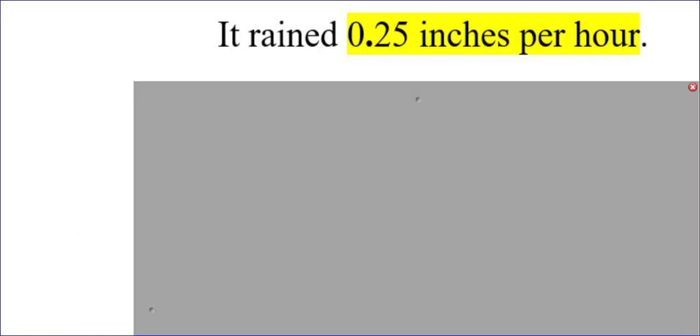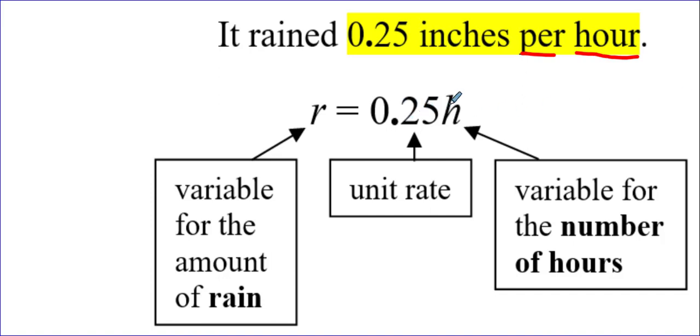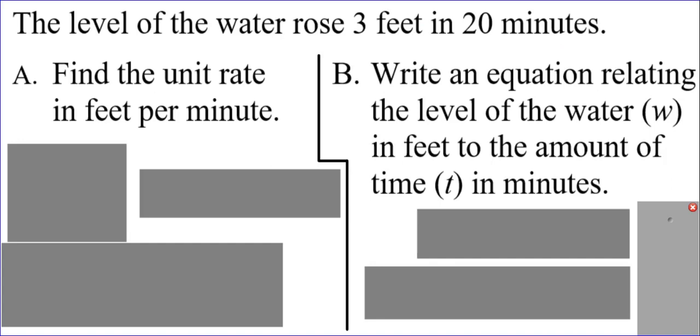Here's another example. It rained 0.25 inches per hour. If it's per hour, that means times the hours. That's why 0.25 is times the letter h for the number of hours. We picked r, or we could have picked i, for the inches of rain that had fallen.